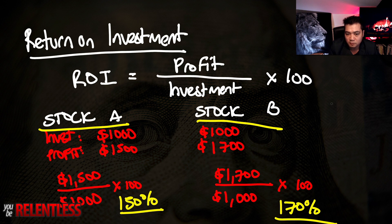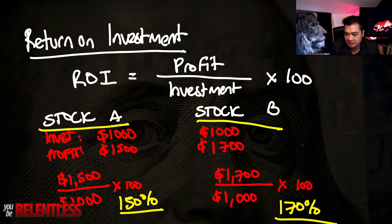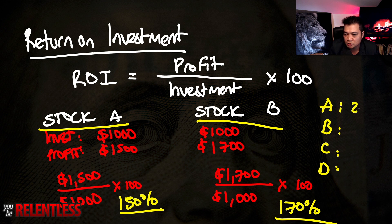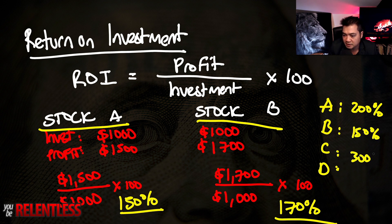In calculating return on investment, you want to look at different types of stocks, real estate, or whatever investment you've got — figure out how much money you're putting down and how much profit that investment makes at the end of the year, then do the calculations. So if you're looking at multiple investments A, B, C, D and you look at the returns: A returns 200%, B returns 150%, C returns 300%, and D returns 1,000%.